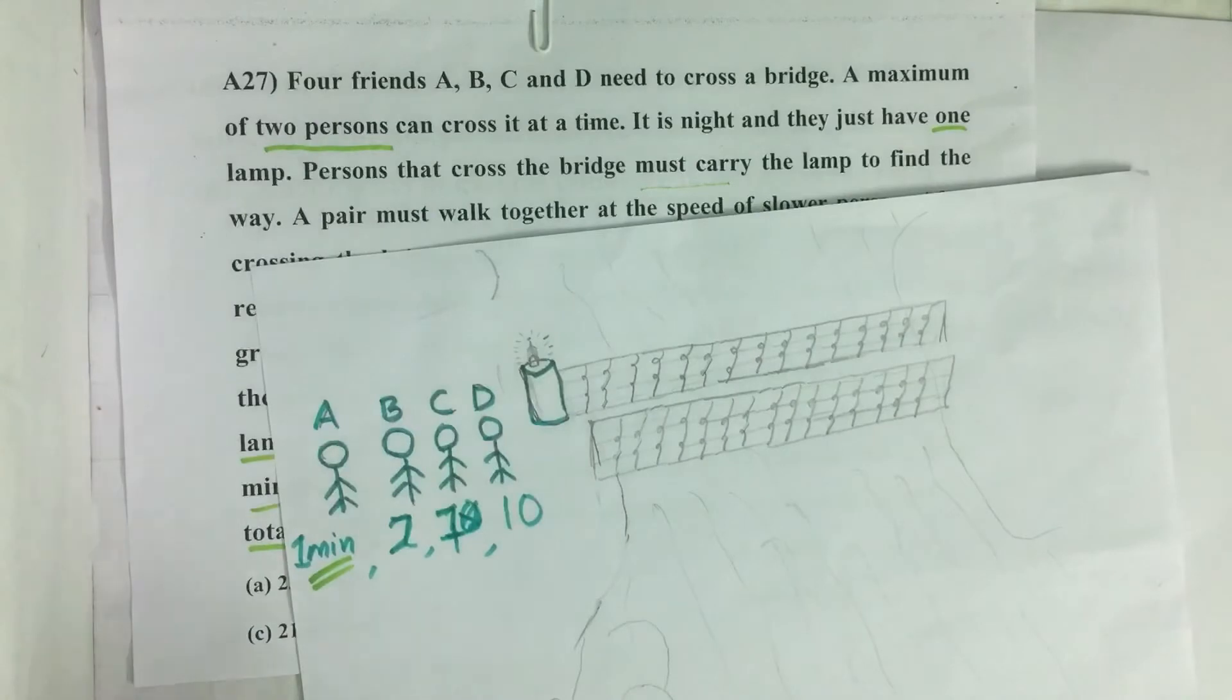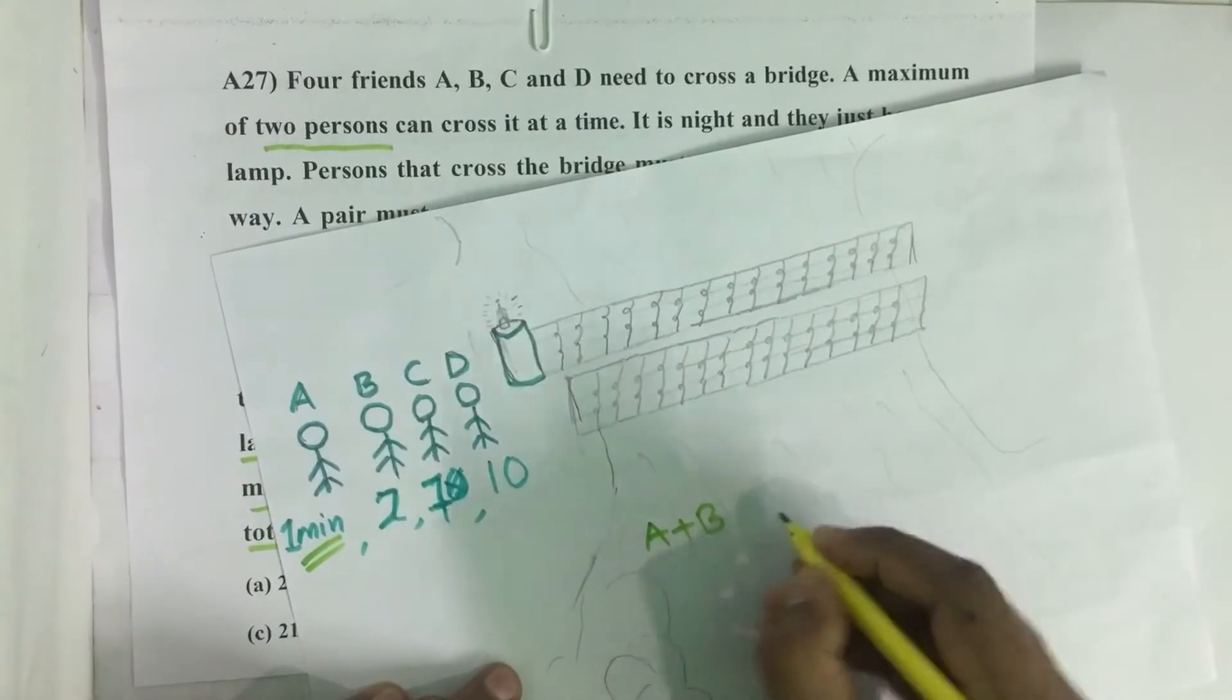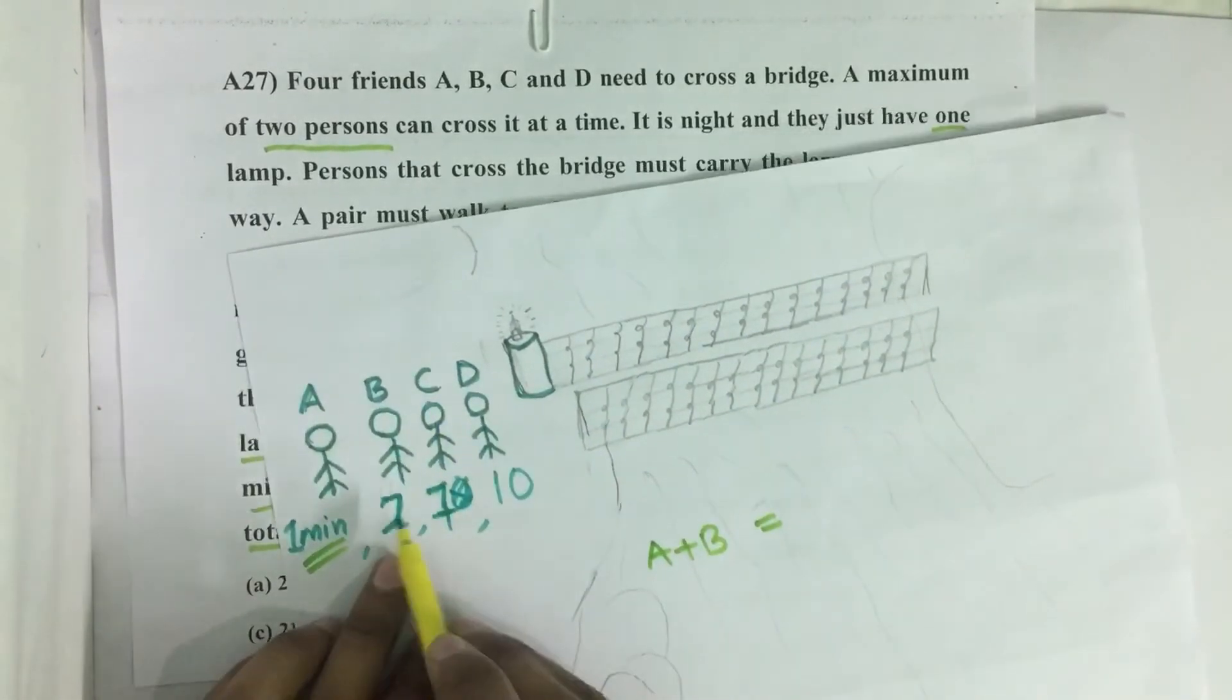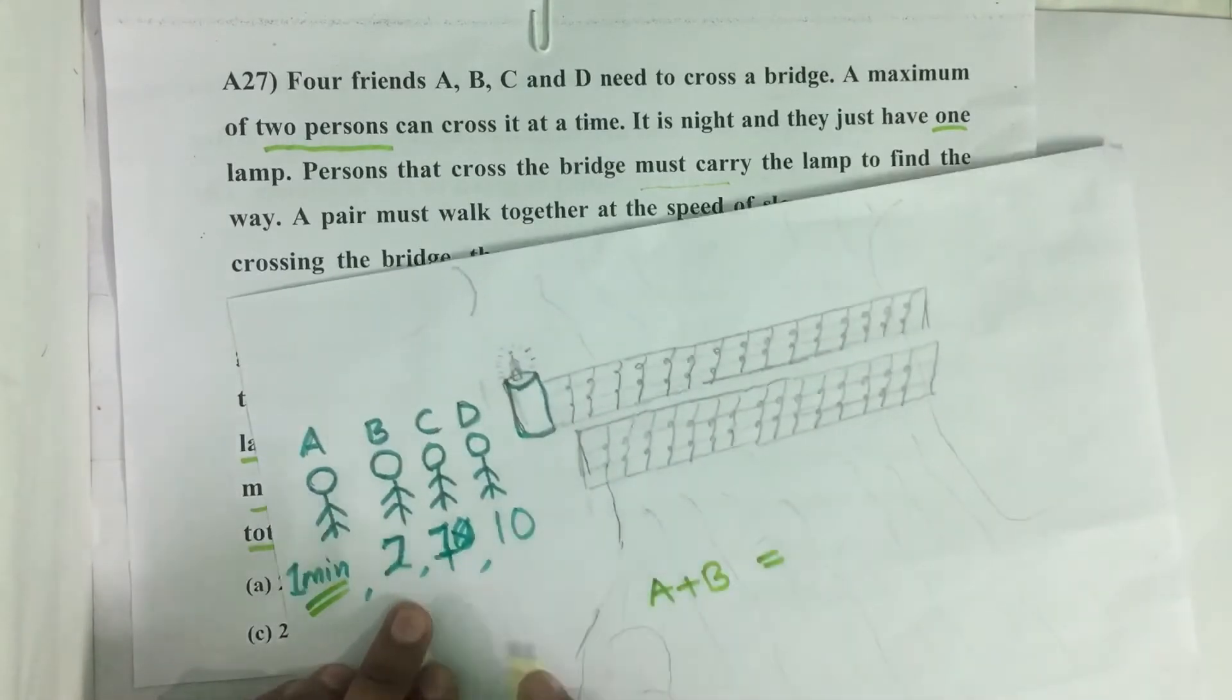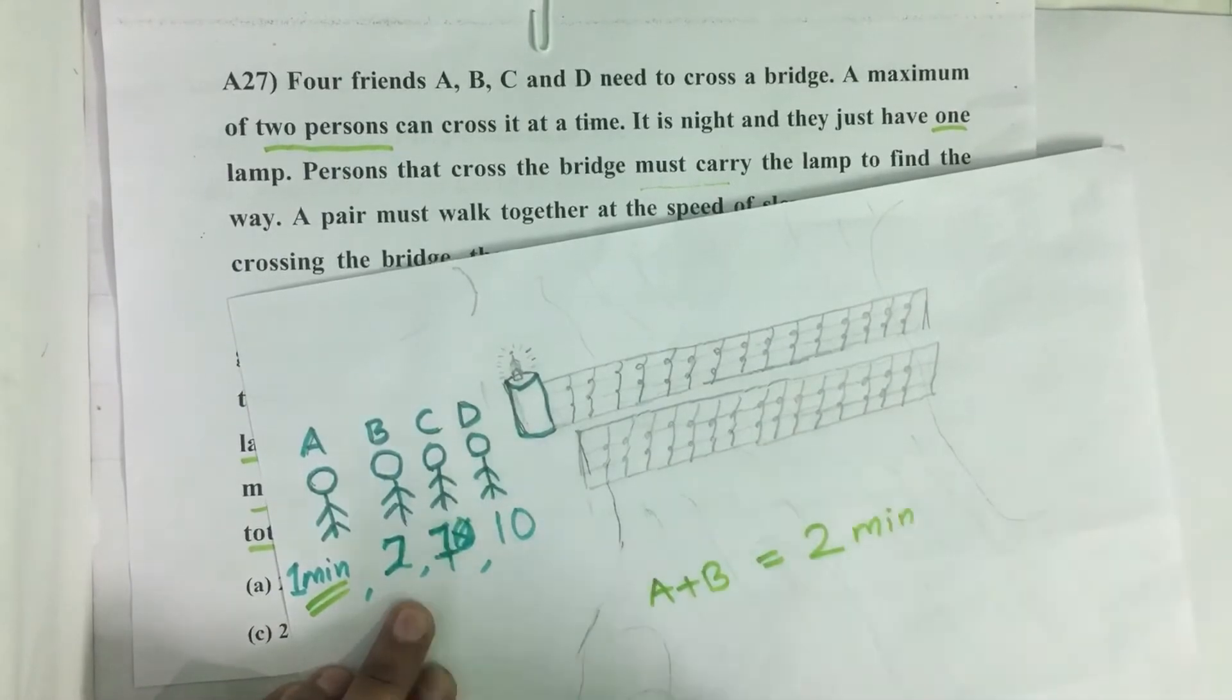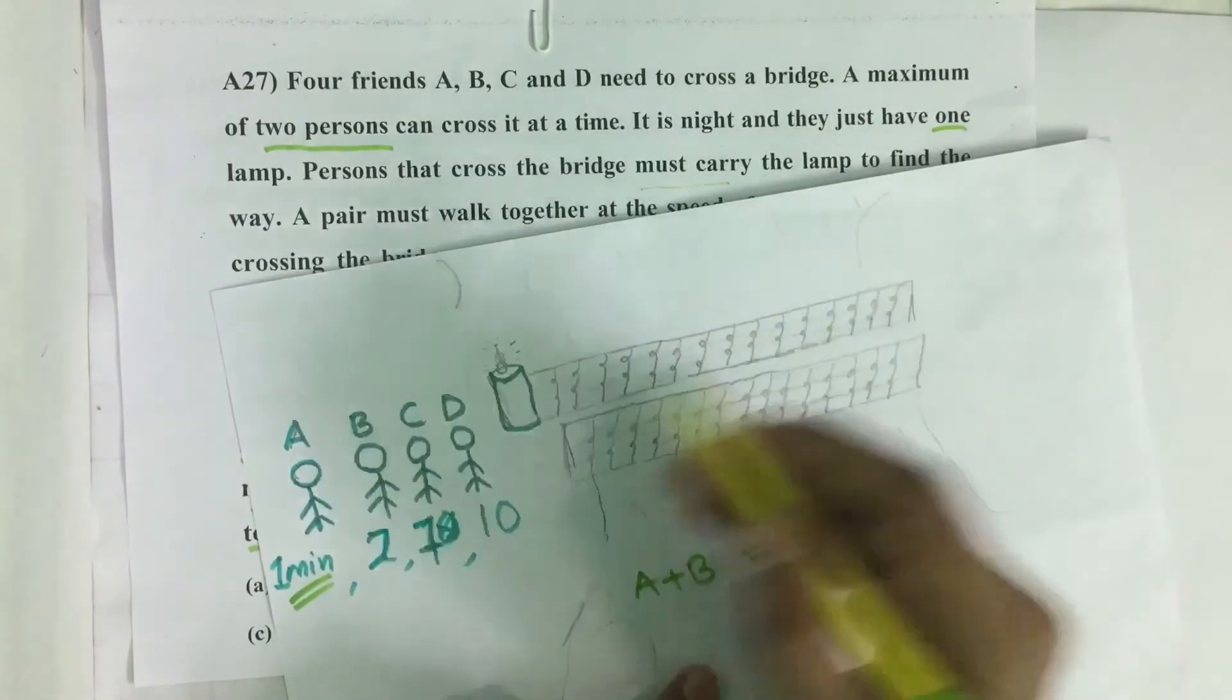First, A and B pass the bridge. When they walk together, it takes the speed of slower person, so this time is two minutes. They can cross the bridge in two minutes. Then once they reach the other side, A will return with the lamp and it takes only one minute.